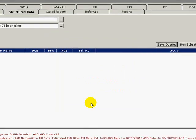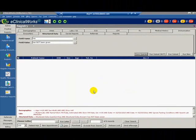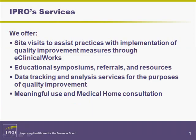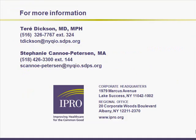Refer back to the creation of the microalbumin registry for details on how to view the report and alerts. This concludes Part 2, Section 1C, Creating a Registry Alert. IPRO offers a variety of services that can assist you further. We can work with you on-site to help you use eClinicalWorks to implement quality improvement plans. We offer educational symposiums featuring clinical champions and provide referrals to helpful resources. IPRO can analyze data collected through eClinicalWorks to measure your performance on quality measures. We also offer consultations on meaningful use and medical home recognition applications. If you have any questions or comments on this section or would like more information on IPRO services, please contact us.